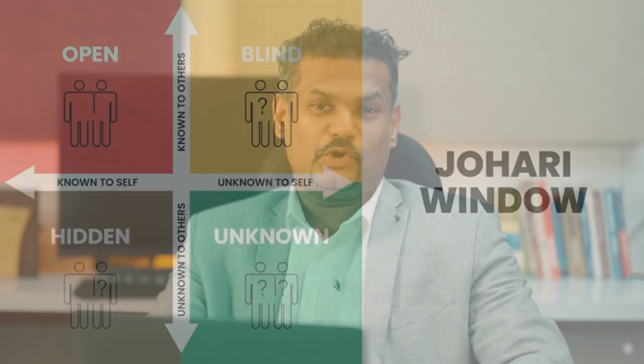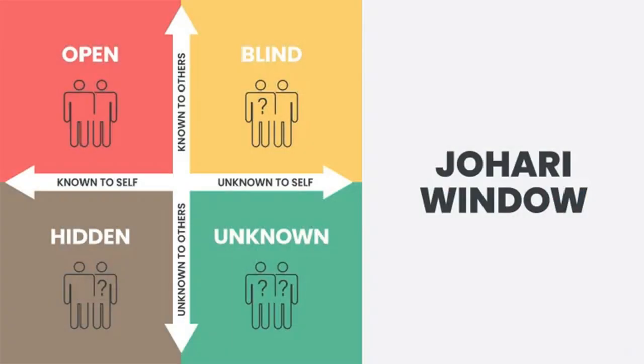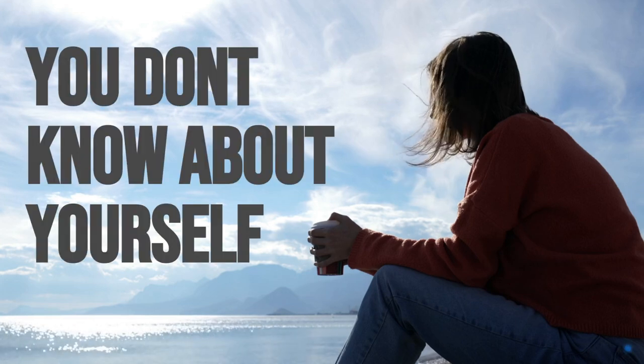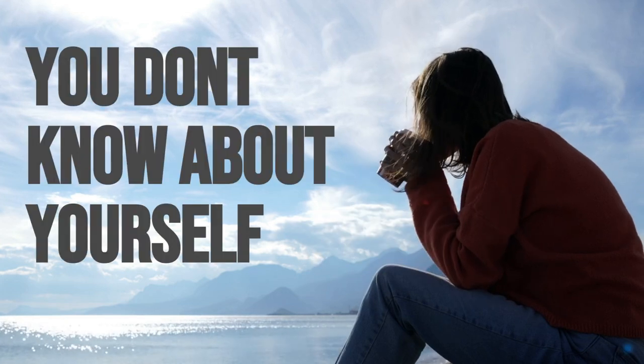The model has four quadrants: open, blind, hidden, and unknown. The open quadrant is what you and others know about you. The blind is what others know but you don't know about yourself.